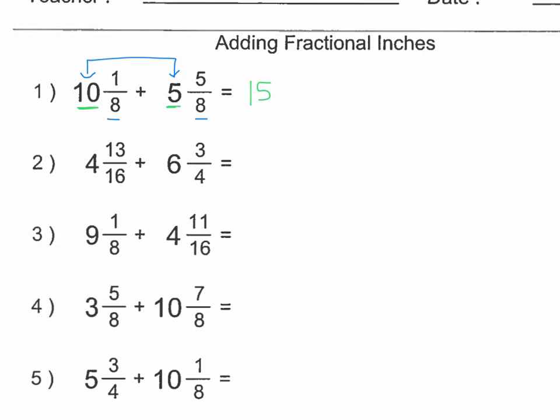So 10 plus 5 gives us 15. And then we're going to take the 1/8 and the 5/8 and add them together. Now we're lucky in this case because the bottom numbers are already the same. So if I have 1/8 and I want to add 5/8, altogether 1 plus 5 would be 6/8. So that's 15 total inches and 6/8 of an inch.